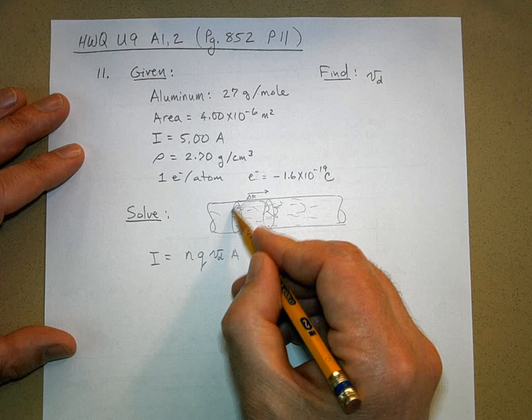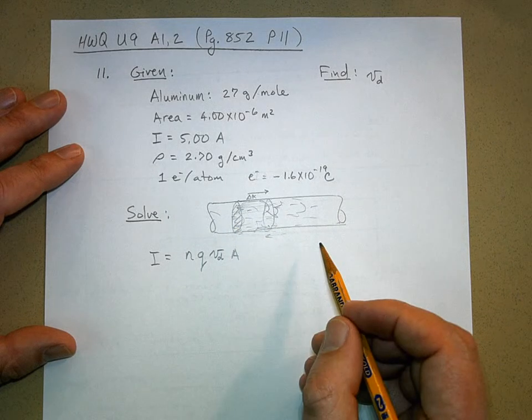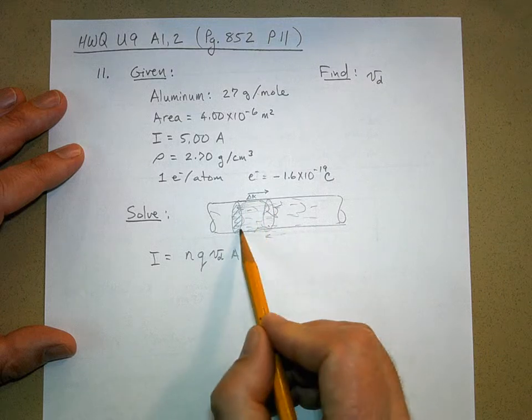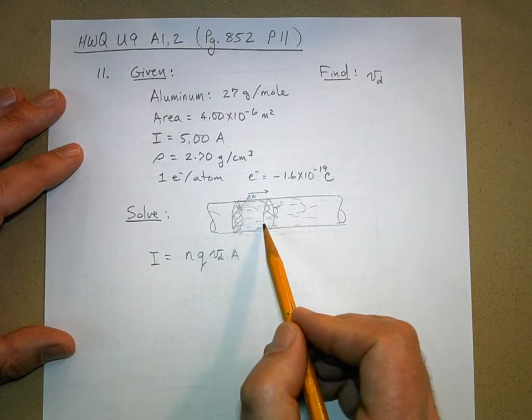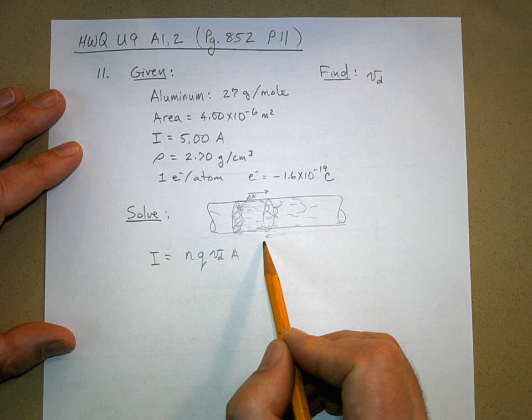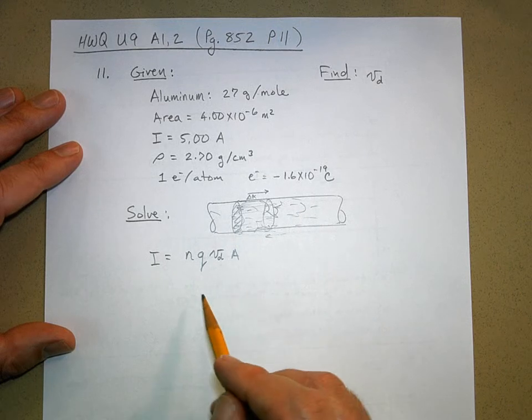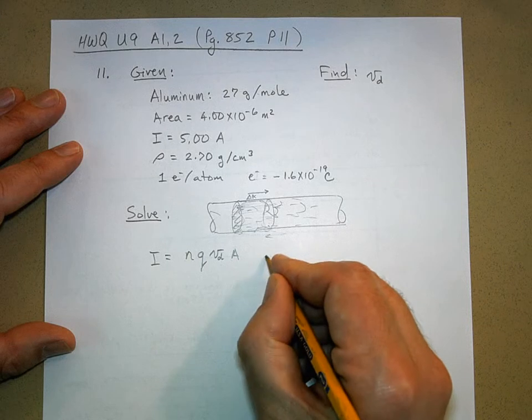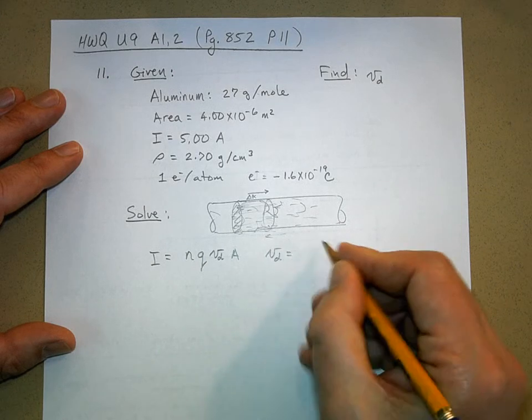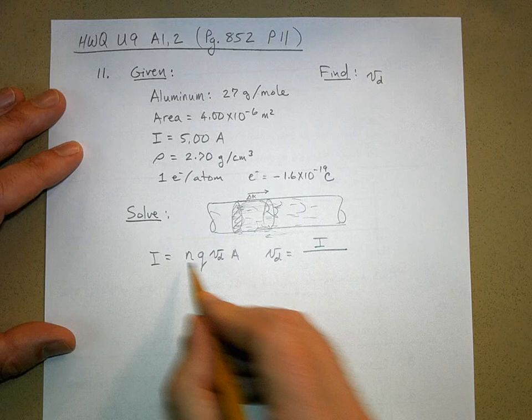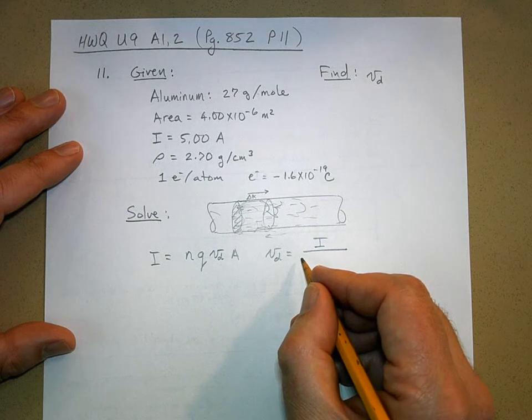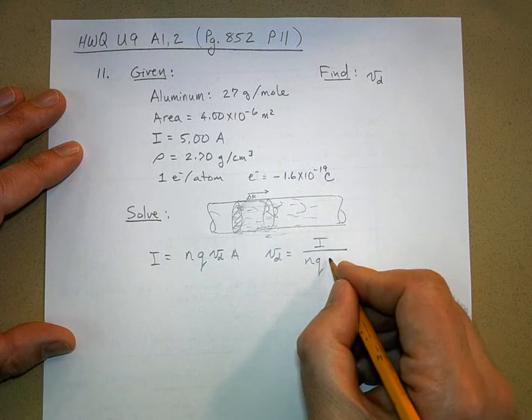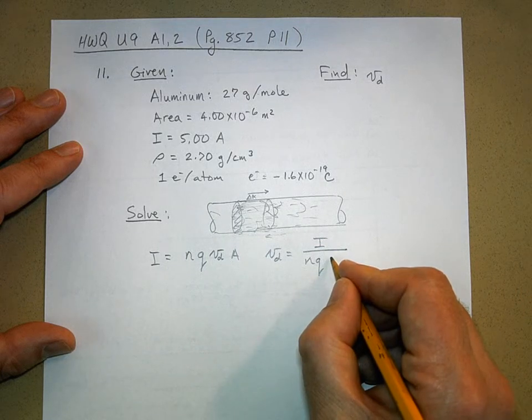And we have an equation for that. The current is the number of charge carriers per unit volume, and we could create a volume here. Here's the volume contained by the wire. Times the charge on each charge carrier, and then we have this delta x. That's where we get the drift velocity from, and then times the area, this cross-sectional area.